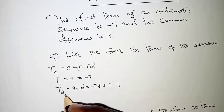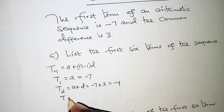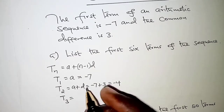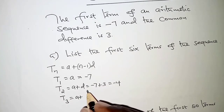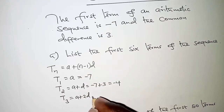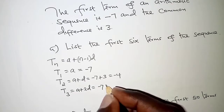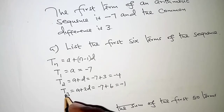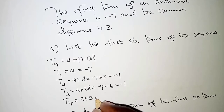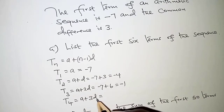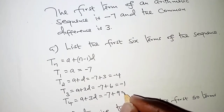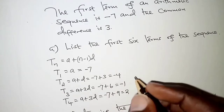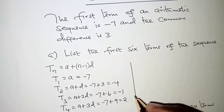Next we move to the third term. With n equal to 3, we have a plus 3 minus 1, that is 2d, and that is negative 7 plus 2 times 3, which is 6, giving us negative 1. The fourth term is the first term plus 4 minus 1, that is 3d, so negative 7 plus 3 times 3 equals 9, giving us 2.